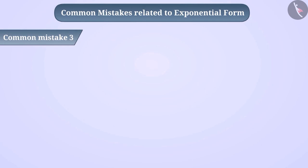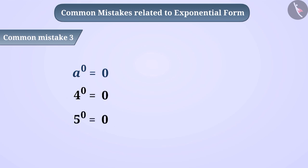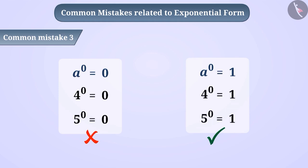Common Mistake 3: Some children understand that if any number is raised to 0, then its value is also 0. For example, they believe 4 raised to the power of 0 equals 0, or 5 raised to the power of 0 equals 0. But this is also a misunderstanding. If the power of any number is 0, its value is 1. We will see the reason for this in the next video.